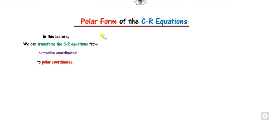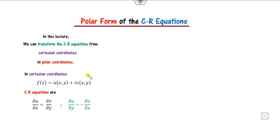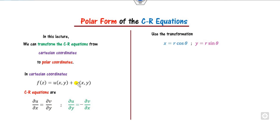In our last lecture, we discussed the Cauchy-Riemann equations in Cartesian coordinates. Right now we are discussing how to change the Cauchy-Riemann equations to the polar coordinate form. The Cauchy-Riemann equations in Cartesian form are: the partial derivative of u with respect to x equals v with respect to y, and so on. Our target is to convert this Cartesian form to the polar form.